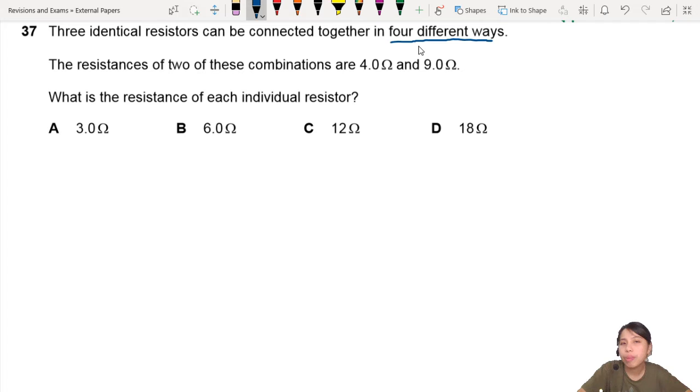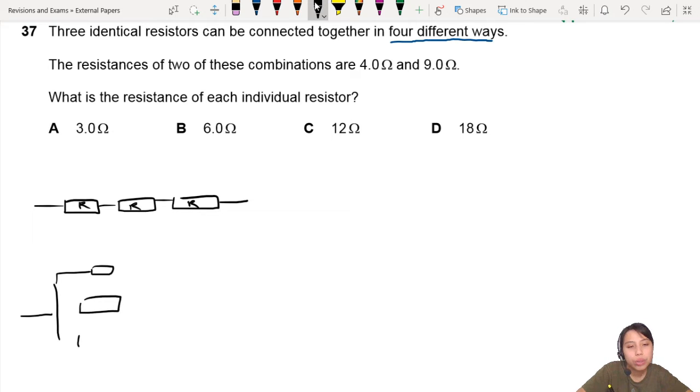Can we draw some diagrams to tell us how these resistors may be connected? Four different ways? So the classic, our favorite one is three in a row or three in series is the proper scientific term. Then you have three in parallel which is something like this. One, two, three.